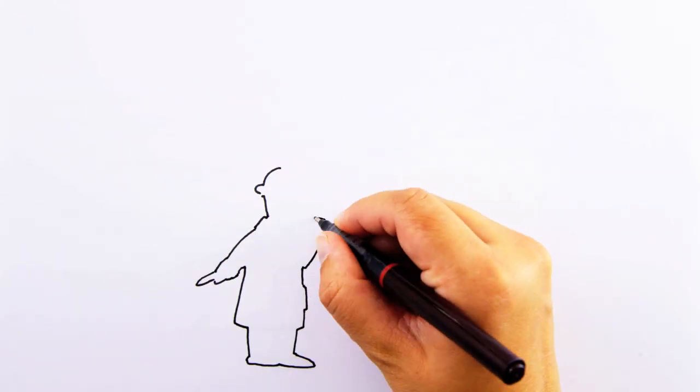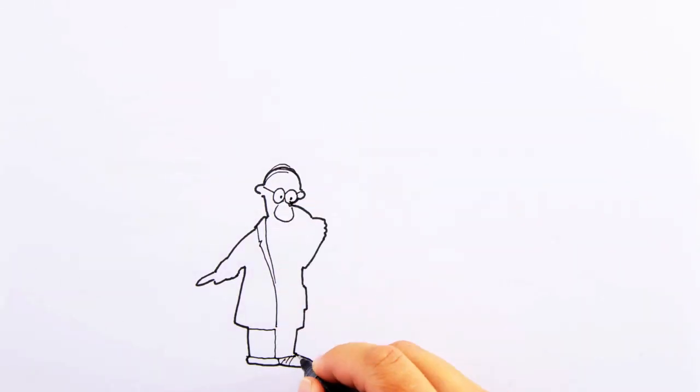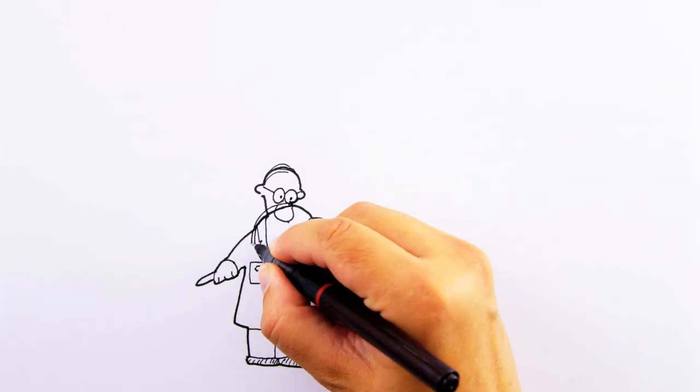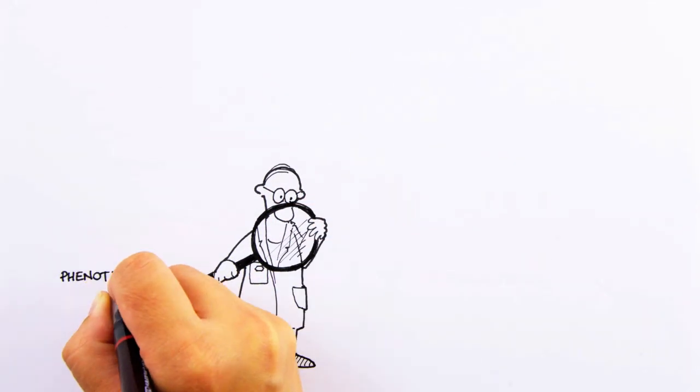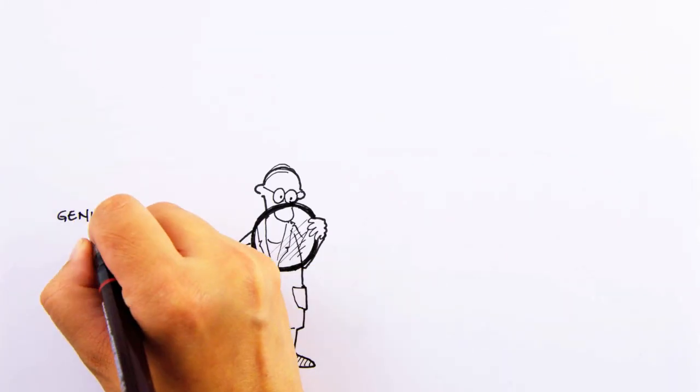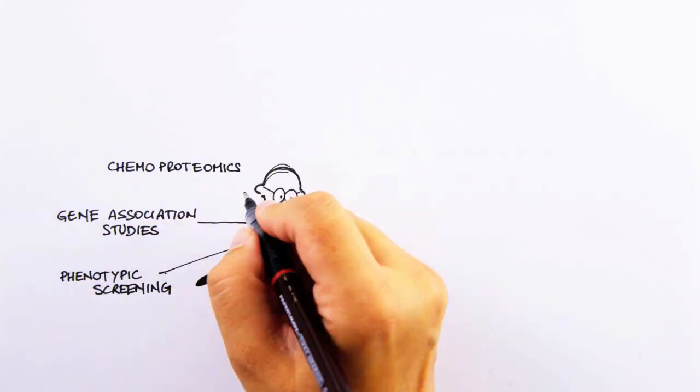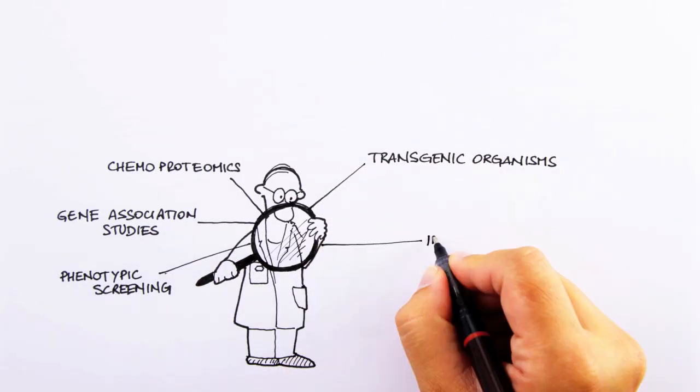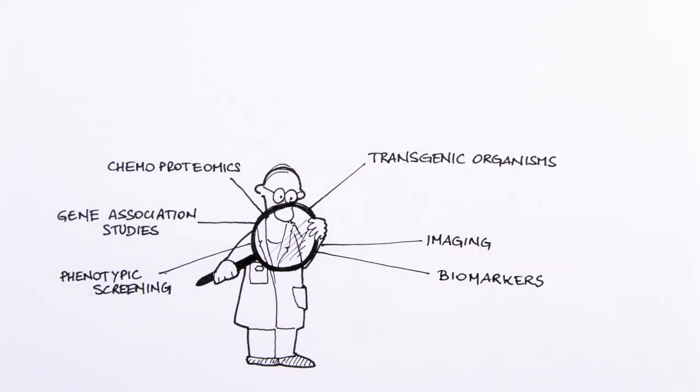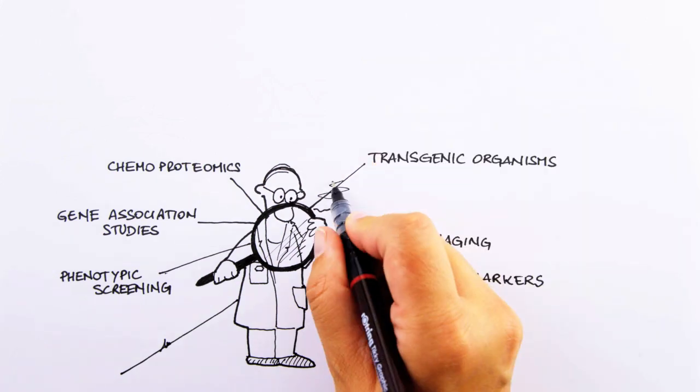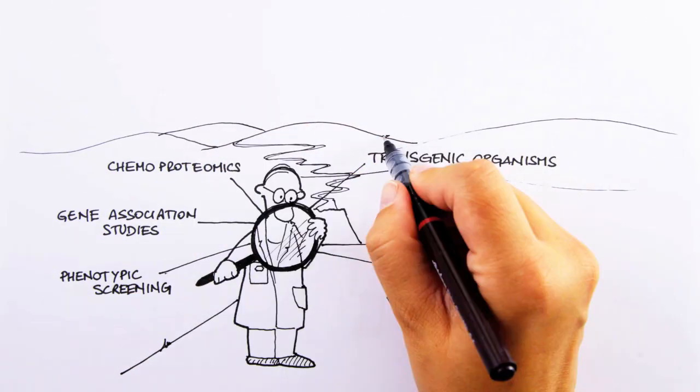At Roche-PRED we consistently look for new targets with many different approaches, from phenotypic screening to gene association studies, to chemoproteomics, transgenic organisms, imaging, biomarkers and many other methods, looking for the gold nugget of information hidden in large amounts of biological data.